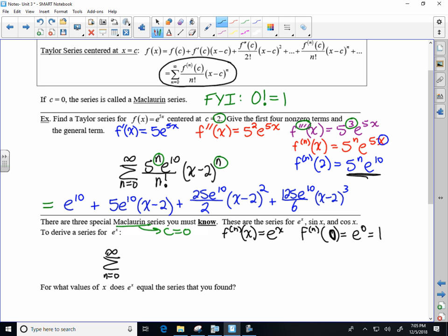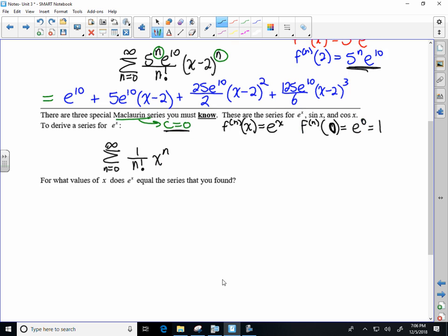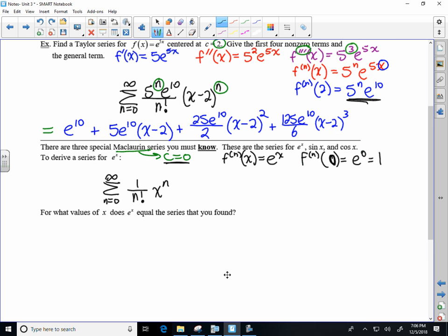The bottom part is going to be 1, no matter what. The bottom part is going to be n factorial. We're defining c as 0 because it's Maclaurin. So x to the nth power. So then you know, you can list out terms of the series as needed.